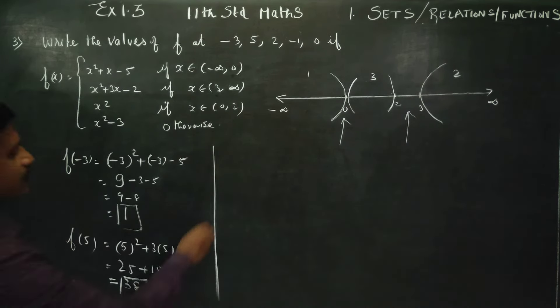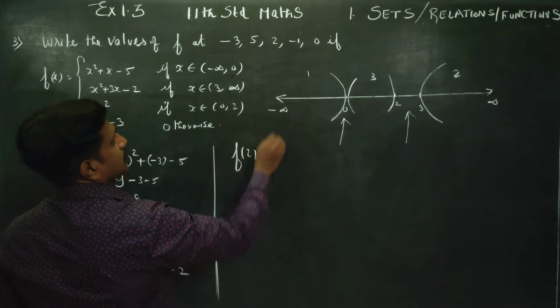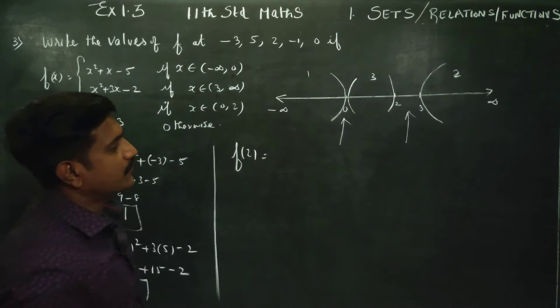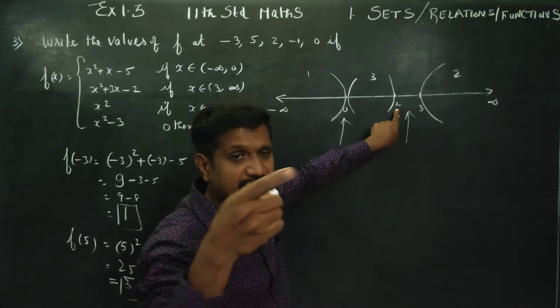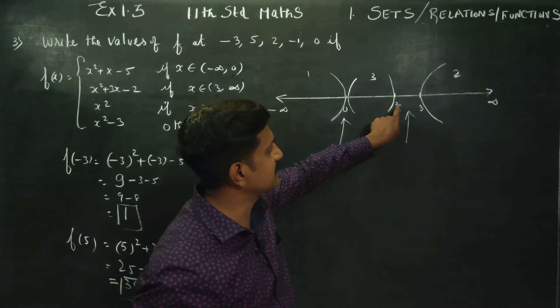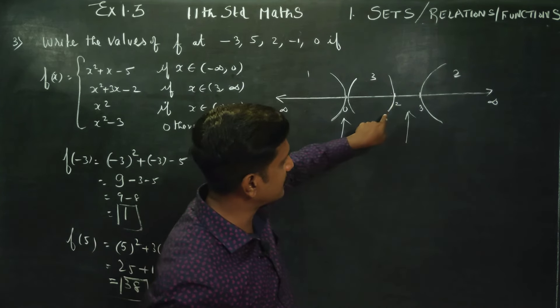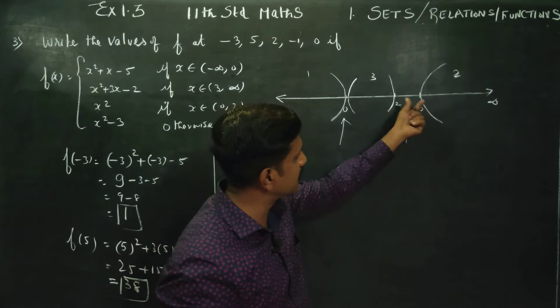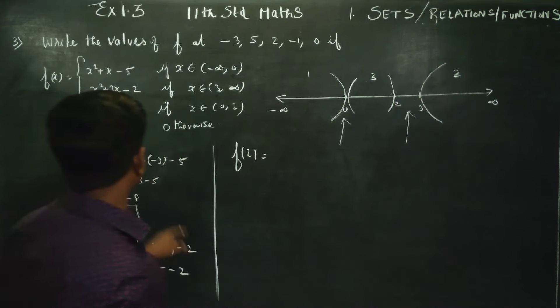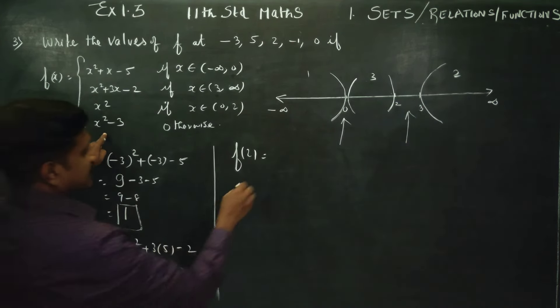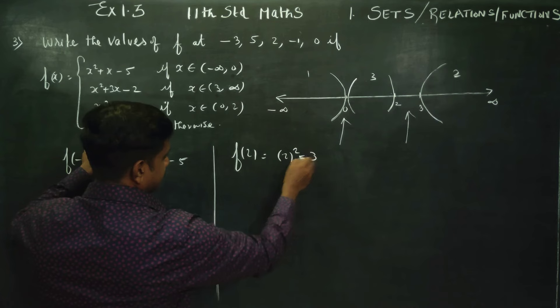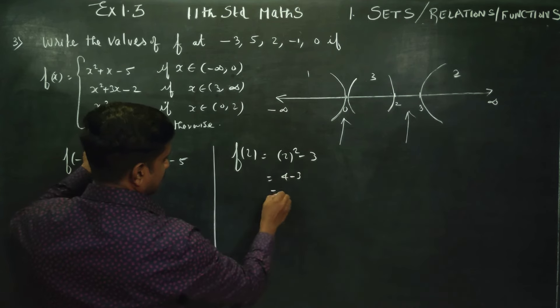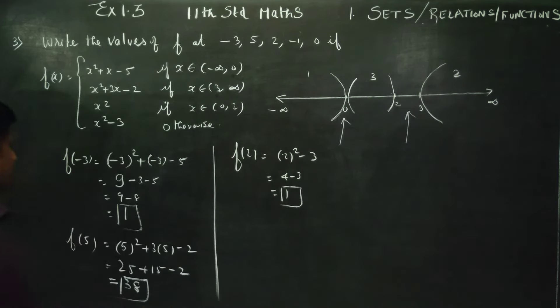Next, f of 2. Third is f of 2. f of 2 comes in otherwise. Otherwise. Open interval, 2 and 3, otherwise. x square minus 3, 4 minus 3, my answer will be 1. This is f of 2.